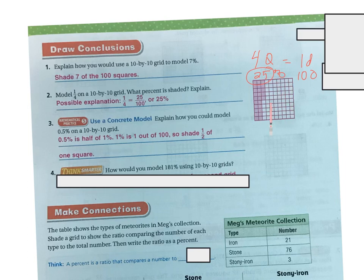So this entire thing, I would only shade half of just this one tiny little square to represent 0.5%.